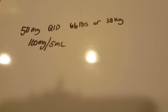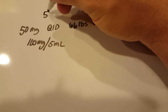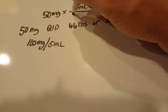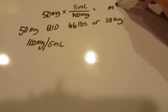As far as calculating the dosage, because it doesn't give you any milligram per kilogram body weight, you don't really have to take weight into account because this is going to be age-based. All you need to do is take the 50 milligrams and multiply by 5 ml over the 100 milligrams, and that will give you your milliliters.